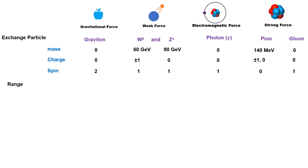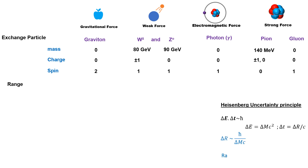Now let's talk about the range of these forces. To calculate the range of a force, we need the Heisenberg uncertainty principle. According to this, the uncertainty in energy and time of a particle is approximately equal to h-bar. Writing energy in the form of rest mass energy and time in the form of range, we get a relation between the range and mass of the particle. The heavier the particle, the shorter its range — where range means the distance traveled by the particle before decay. If the particle is massless, its range will be infinite. The exchange particles of gravitational and electromagnetic force are massless, so the range of these forces is infinite. While the mass of the exchange particle of weak force is the highest among all, around 90 GeV, the range of this force is the shortest: 0.002 Fermi.